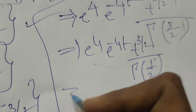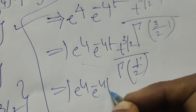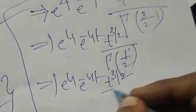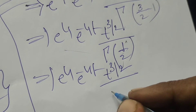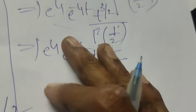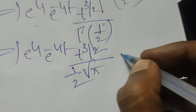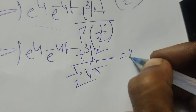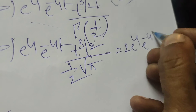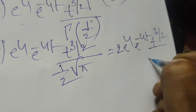So that implies e^4 times e^(-4t) times t^(3/2) times Γ(1/2). Now, Γ(1/2) equals √π, so 1/Γ(3/2) equals 1/(1/2 · √π) = 2/√π. That equals 2 · e^4 · e^(-4t) · t^(3/2) / √π.